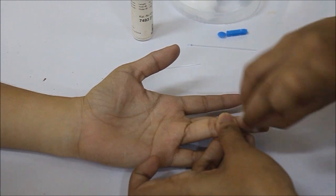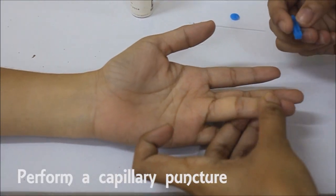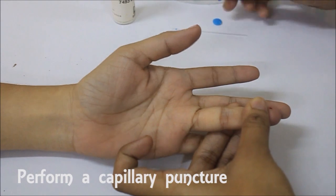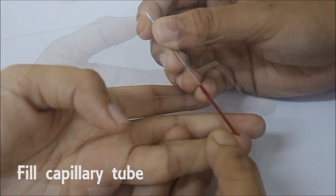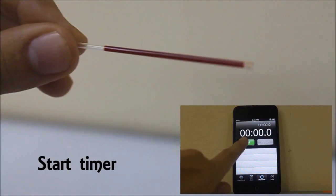To perform the capillary method, first collect blood at the capillary puncture. Fill up a non-heparinized capillary tube and start the timer.